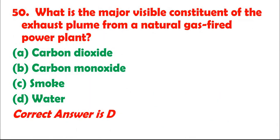Question 50: What is the major visible constituent of the exhaust plume from a natural gas-fired power plant? A. Carbon dioxide. B. Carbon monoxide. C. Smoke. D. Water. Correct answer is D.